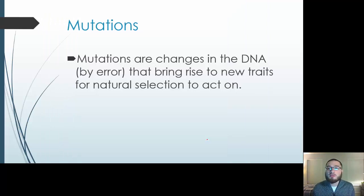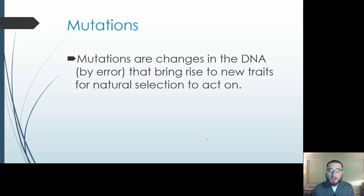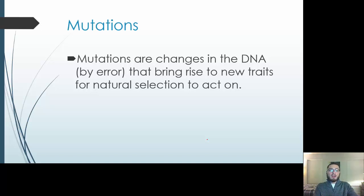Once again, mutations are changes in the DNA — errors that bring rise to new traits for natural selection to act on. We typically think of mutations as a bad thing. But when we look back in evolutionary history, these mutations may be what caused something to survive while others didn't have that trait. The ones with the mutations were able to pass on their genes to their offspring, while those without the mutation weren't fit for that environment and died off.